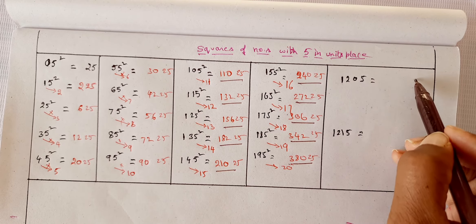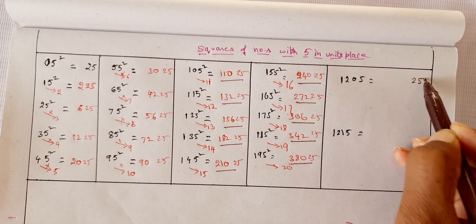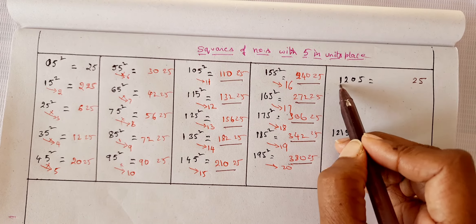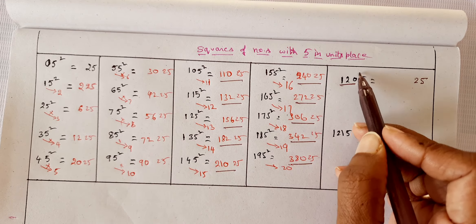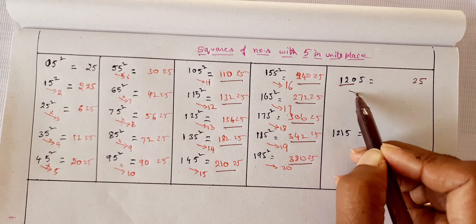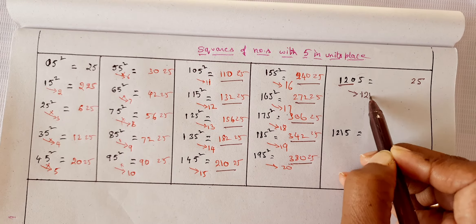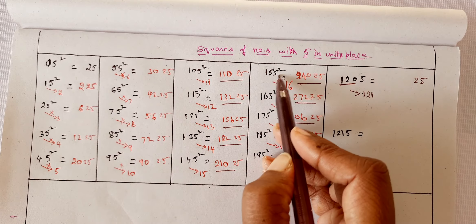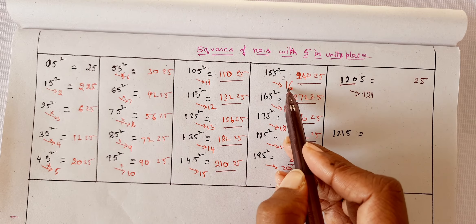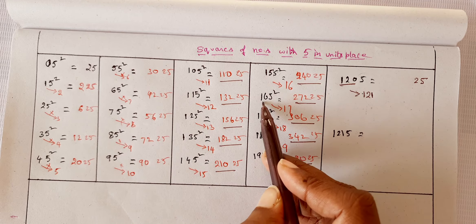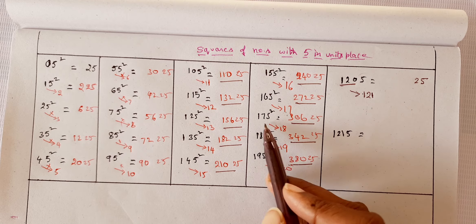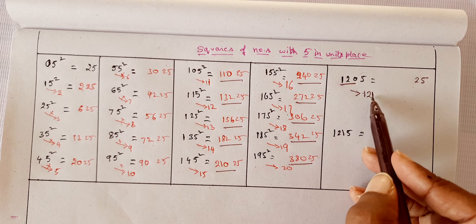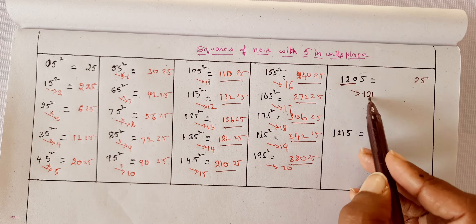So 1205, let us take 25 at the end as usual. Now, excluding the units place, you take the other, the next number, 121. Here also we did the same thing—excluding the units place, 16, excluding the units place, number after 16 is 17, number after 17 is 18. So here this is 121, right? 120 multiplied by 121.